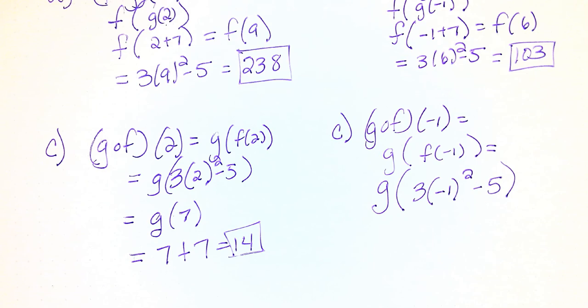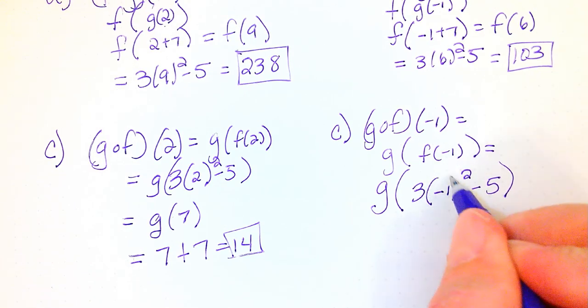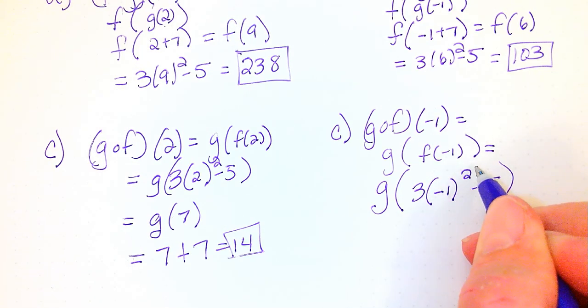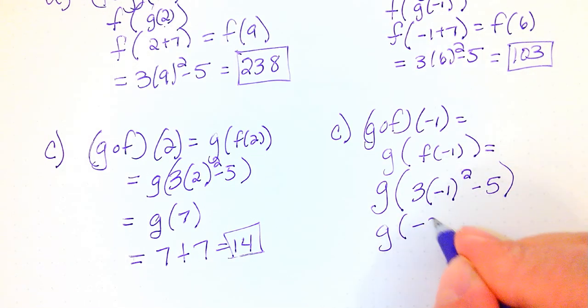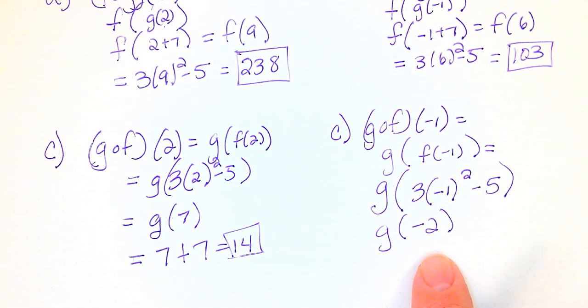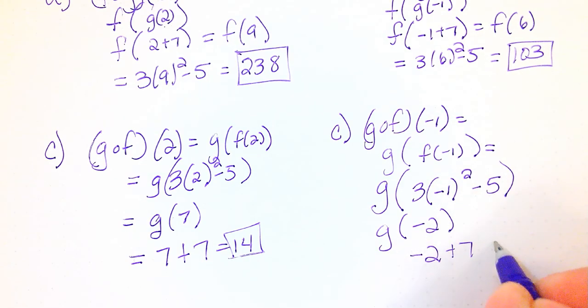You can absolutely do that in the calculator, but you do need to make sure that you put parentheses around the negative 1 and then square it. The square should go on the outside, not the inside of the parentheses. So this is going to be g of negative 2. And last, we take the negative 2. We're going to plug it in x plus 7. So negative 2 plus 7 gives me 5.